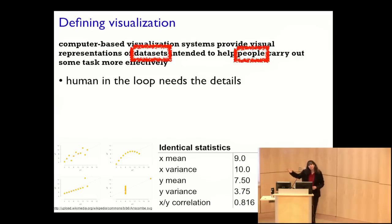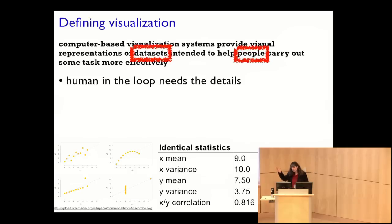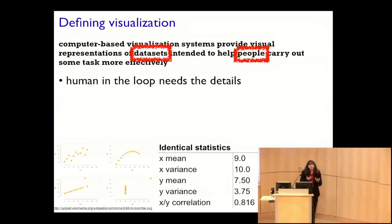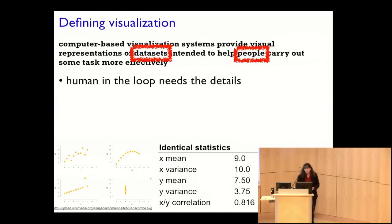Although this is a caricature — a tiny data set with 20 dots — think about situations in the real world where humans do need to know the rich characteristics of the distribution of a data set.